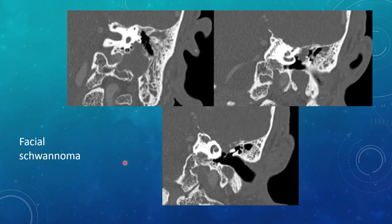The other facial nerve pathology you can see on CT is a facial schwannoma. When these are big enough, you will see expansion and remodeling of the facial nerve canal. Here the stylomastoid foramen is widened, and the facial nerve canal is very much widened as it ascends. The geniculate ganglion is very expanded with soft tissue density. This is a large facial nerve schwannoma.